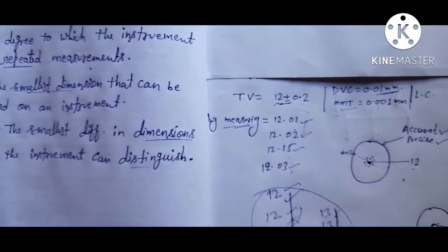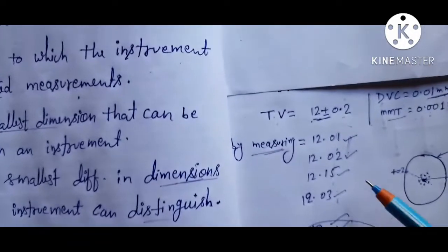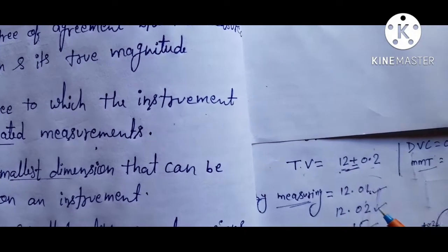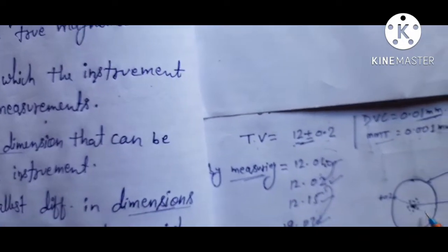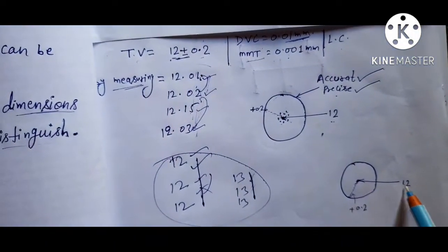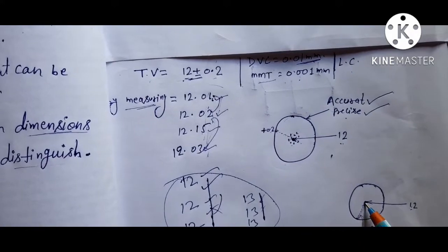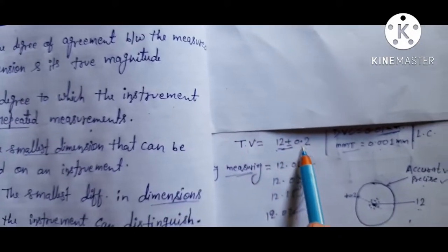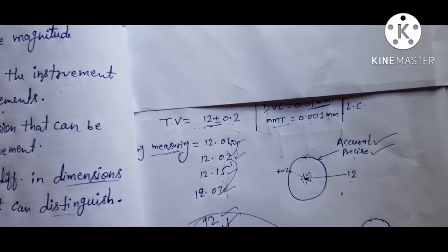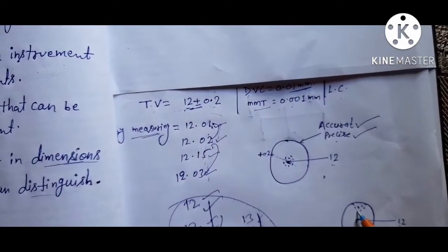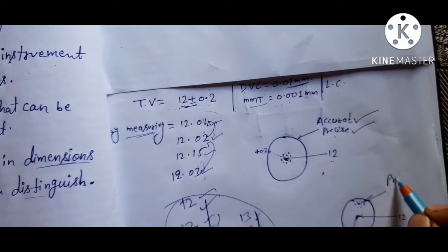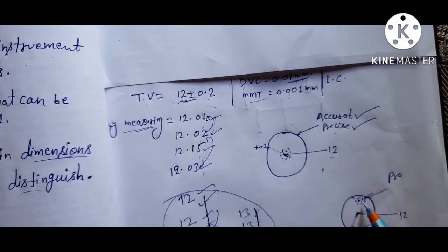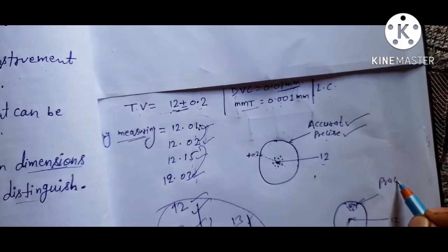In the diagram, values very close to each other — like 0.01 and 0.03 apart — are accurate and precise. But if the target point is 12 ± 0.2 and all measurements cluster together away from 12, those readings are precise because all instruments give values very close to each other, but not accurate.